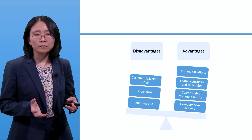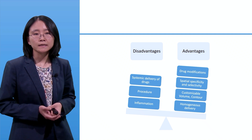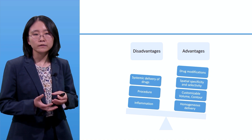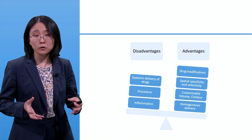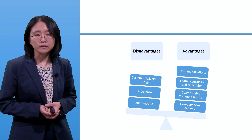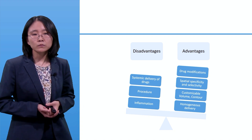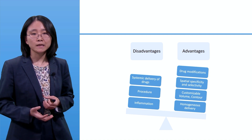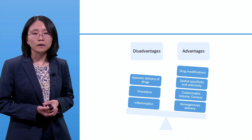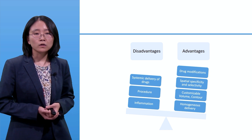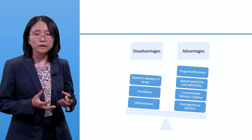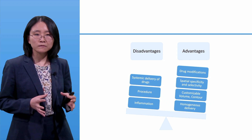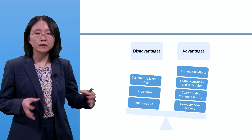The volume of blood-brain barrier opening and drug delivery is customizable and can be contoured to a specific anatomical area. This is particularly relevant when delivering drugs to areas like the putamen, hippocampus, or deep areas like the brainstem, where we might want drug delivery only to a specific anatomic target and not to surrounding areas.